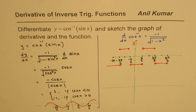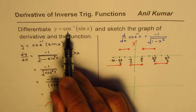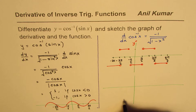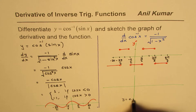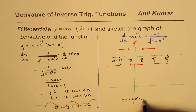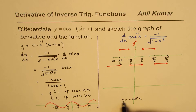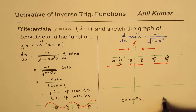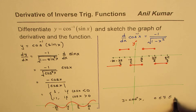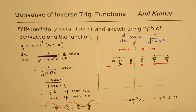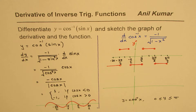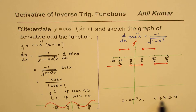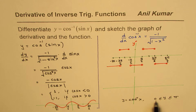Now let's sketch the graph of the function itself. For cos inverse, if y equals cos inverse of x, we know that y represents an angle and y varies from 0 to pi. So the function values are always non-negative.